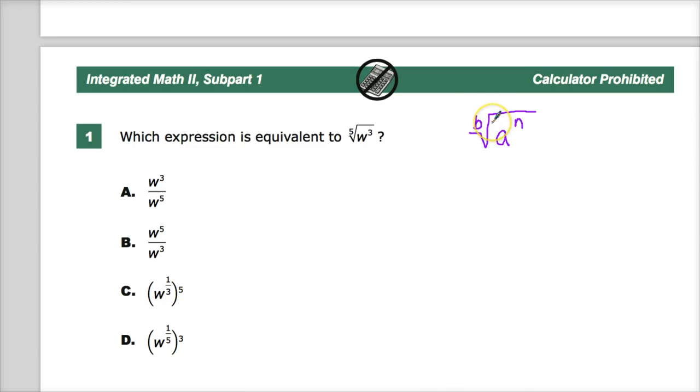The root always goes on the bottom. Why does it work that way? I mean, what's an example of how that can work in real life?